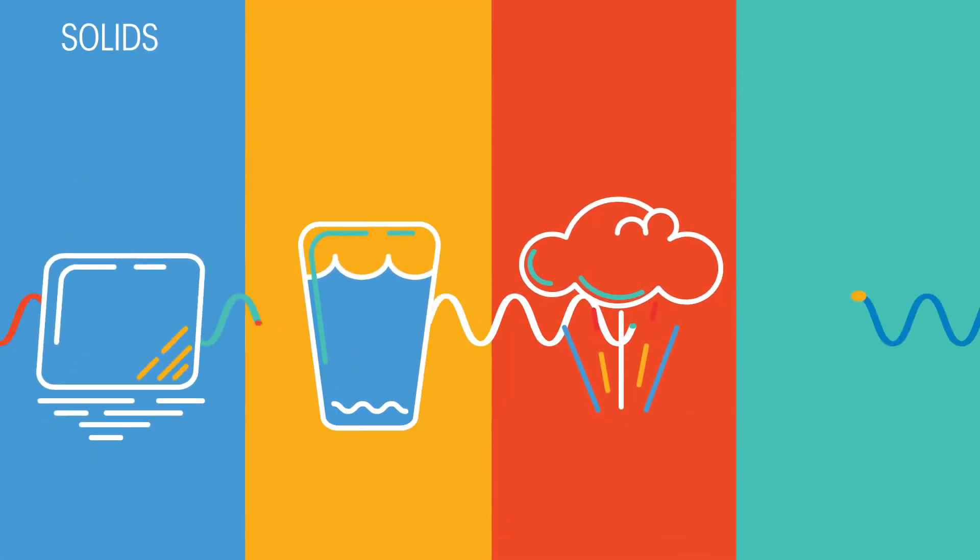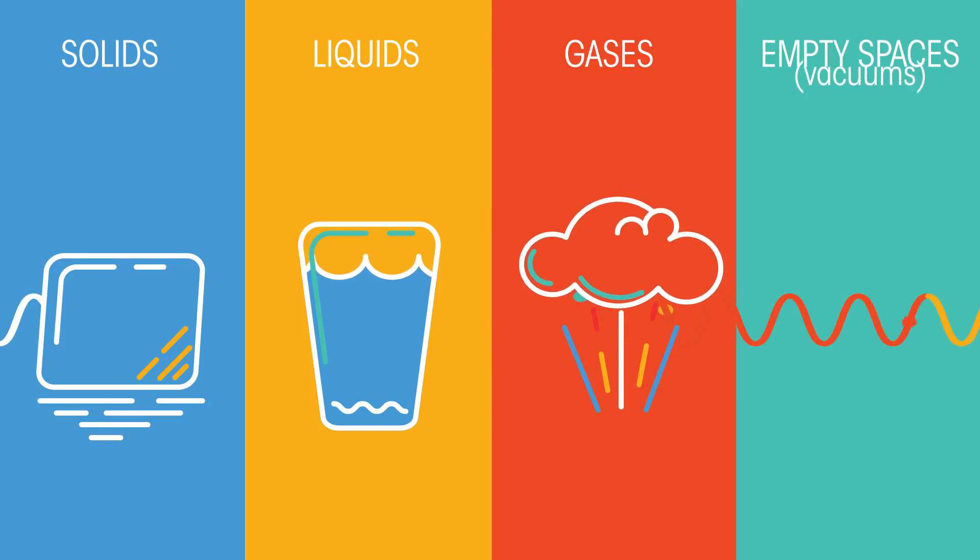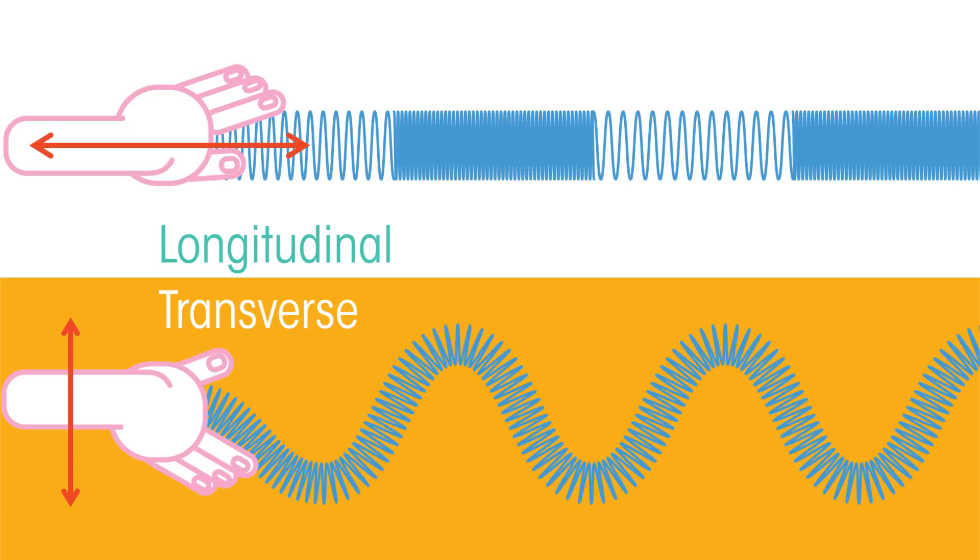Waves can transfer energy through solids, liquids, gases and empty spaces, otherwise known as vacuums. There are two types of waves which we look at in more detail in another video but the basic features are the same.